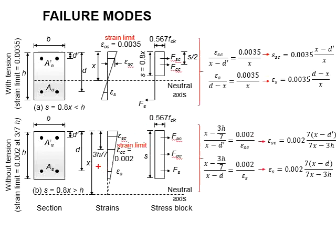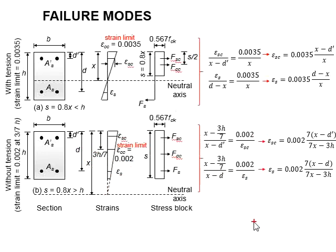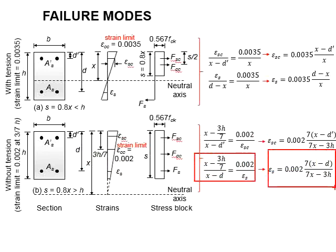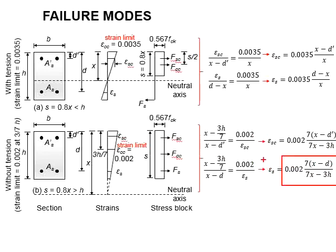As for this, it is in respect to this height, which is x minus d, as compared here. Rearranging the functions, you will get this. From these functions, you are able to determine the strength of the steel.